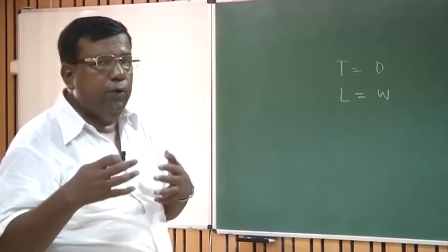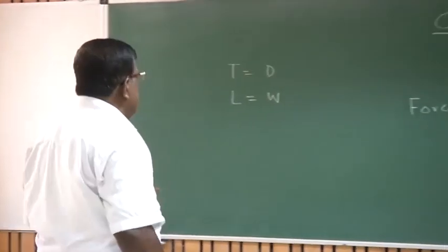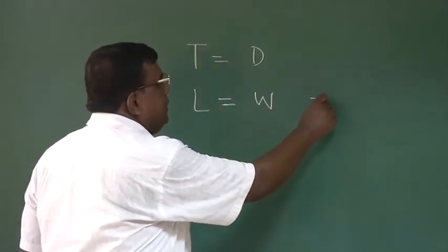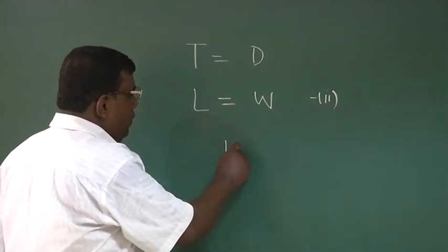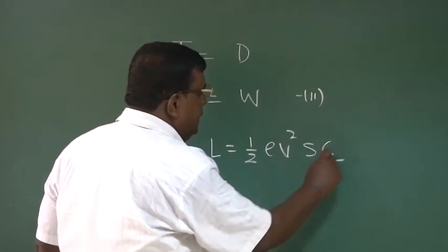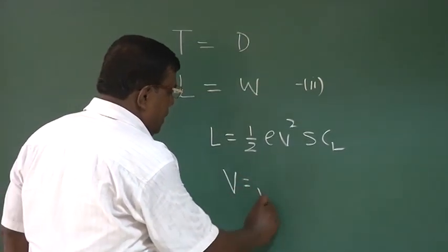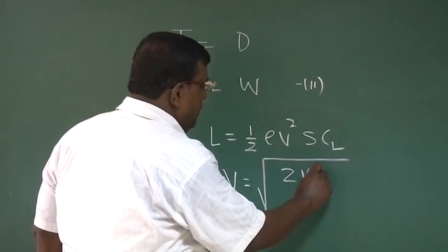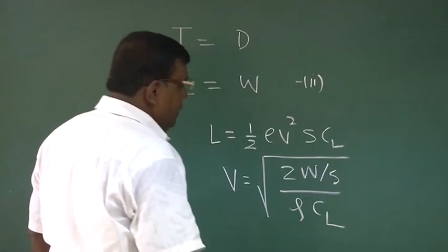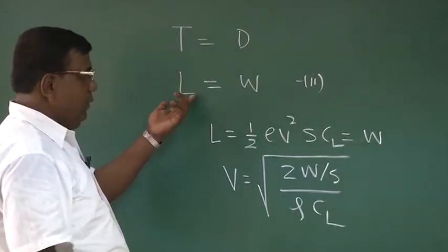Mostly this is done through instrumentation. We will be unfolding this understanding step by step. Let us come back first to the force balance: thrust equal to drag and lift equal to weight. Taking the lift equation, we know lift is half rho V squared S CL. So I can write V equals the square root of (2W/S) divided by (rho CL), because lift equals weight.